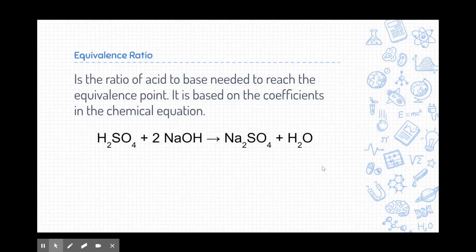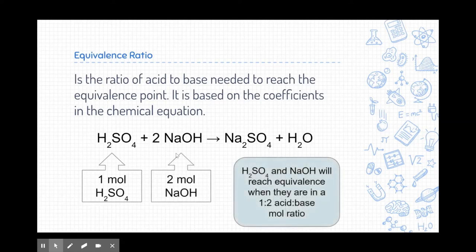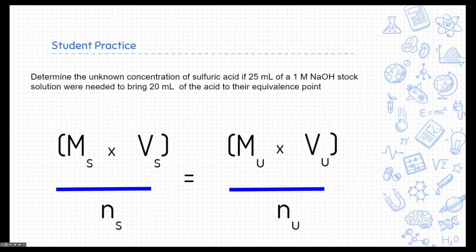Sometimes the ratio is not going to be one to one. In this example, sulfuric acid and sodium hydroxide are reacting. Because we've got two hydrogens on this acid, it's going to need twice as much sodium hydroxide to neutralize it. So one mole of sulfuric acid would need two moles of sodium hydroxide to reach equivalence — they would be in a one-to-two ratio. Pause the video and see if you can determine the answer to the practice problem. It might help to plug in variables you know and write a chemical reaction equation.